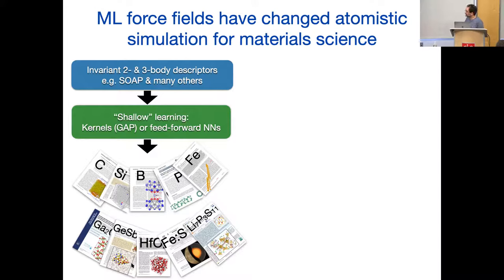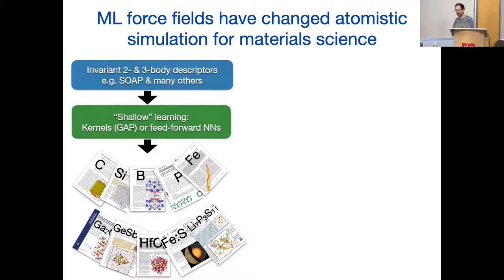Iron and sulfur at Earth's core conditions — temperature and pressure — is not something you can probe experimentally. We can use accurate molecular dynamics to determine the phase segregation of sulfur in solid and liquid iron. Lithium thiophosphate is a proposed solid-state battery material which conducts lithium ions, but exactly how that works and what defects do is unknown — we have to use atomistic simulation.